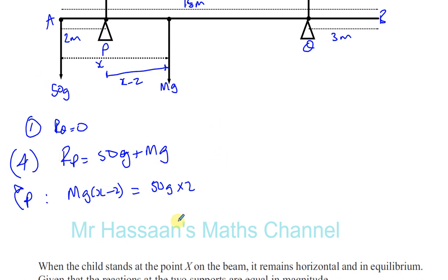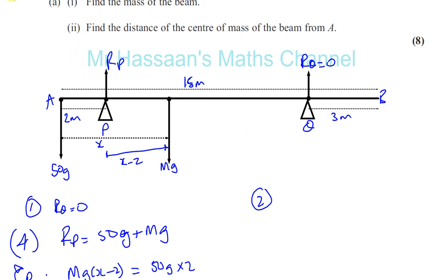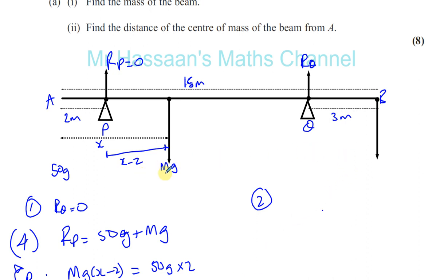In the second situation, the force 50G is at B, and in this case RP is equal to 0. What's the same in both situations is M and X. So when you put the 50 kilogram mass on this side, this is now the weight 50G acting on this side. It's about to tilt about Q, meaning this side is just about to lift up, so there's no reaction force at P. So in the second situation RP is equal to 0, and we can say RQ is equal to 50G plus MG.